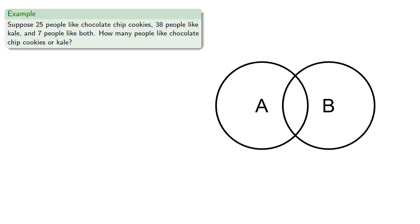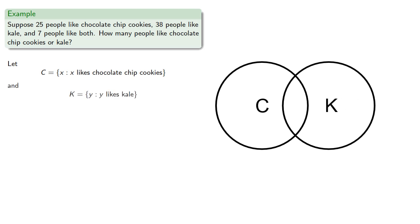For example, suppose 25 people like chocolate chip cookies, 38 like kale, and 7 like both. How many like chocolate chip cookies or kale? We'll let C be the set of people who like chocolate chip cookies, and K be our set of people who like kale.